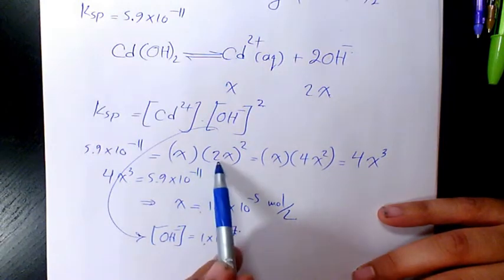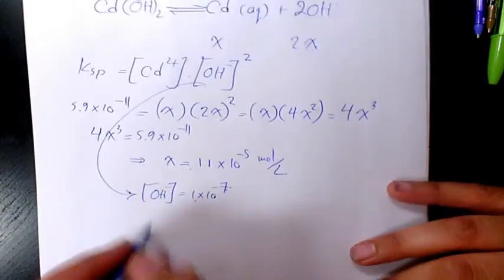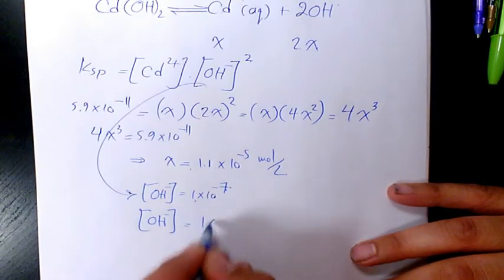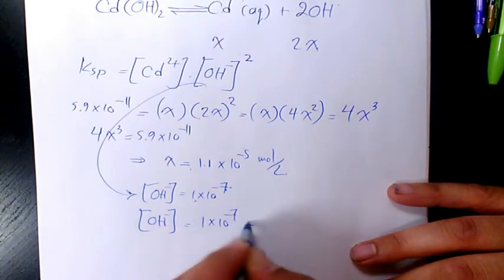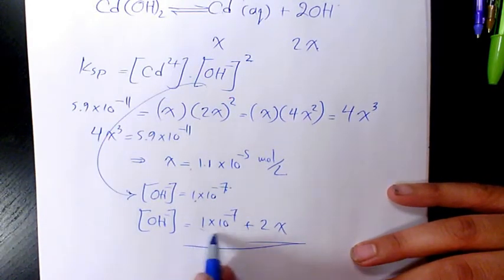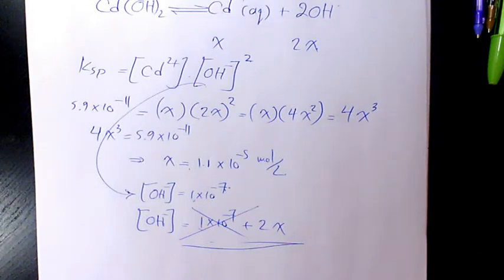So in reality, the concentration of hydroxide is going to be 1 times 10 to the power of negative 7 plus 2X at equilibrium condition. Since this one is much smaller than 2X, we neglect this part. Thank you for watching and have a great day.